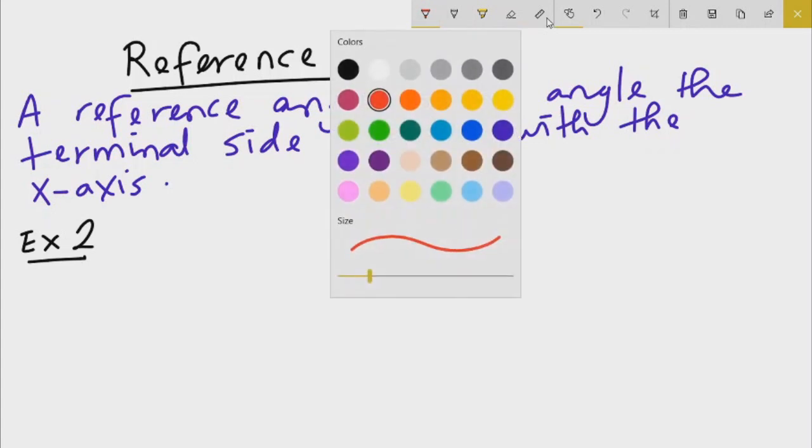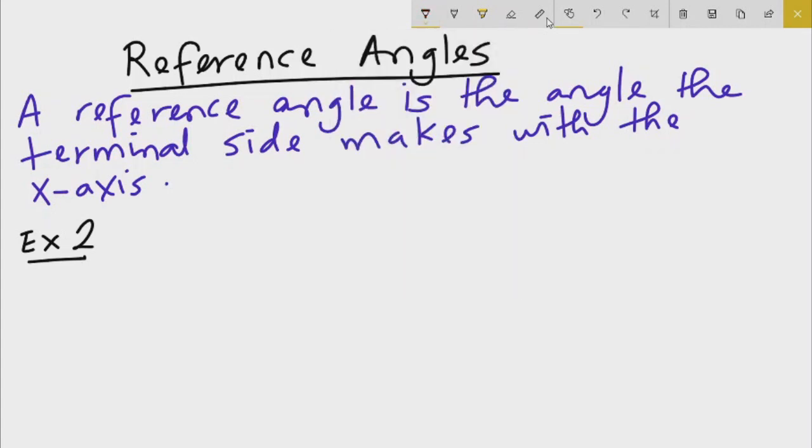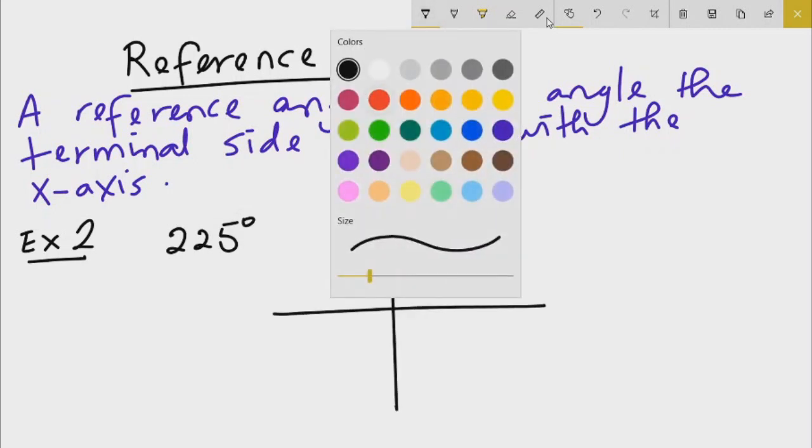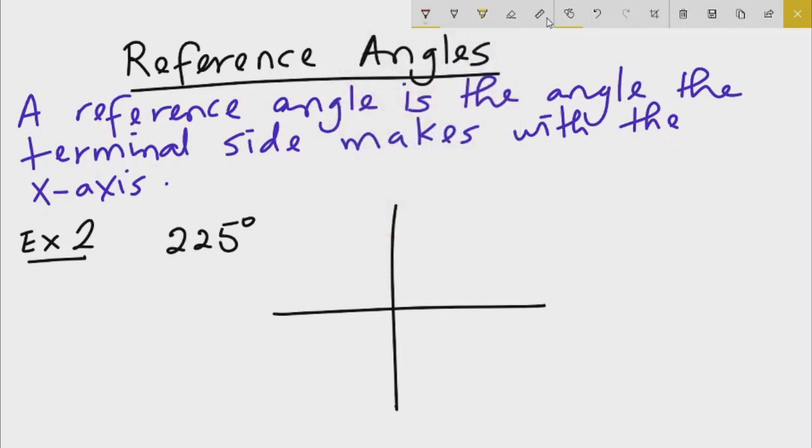Example 2: Find the reference angle for 225 degrees. Just like in the first example, we need to first draw the angle. For 225 degrees, we definitely went over 180 and went over it a little bit, like this. Now to find the reference angle, we need to find the angle that this terminal side makes with the x-axis. We want to find this angle theta.